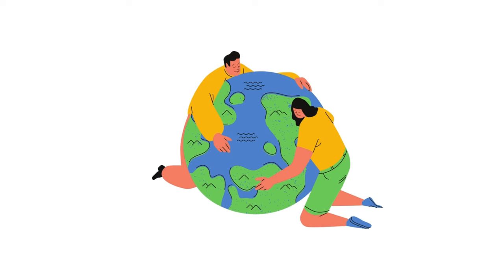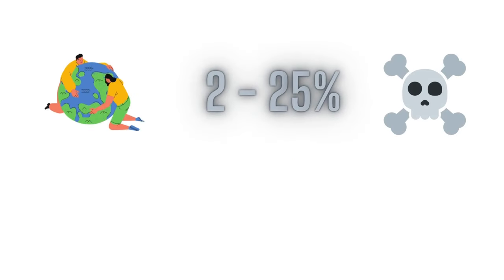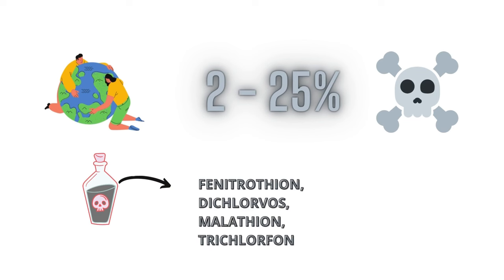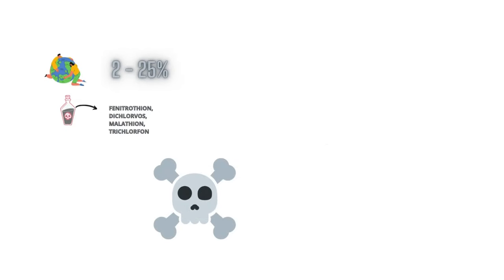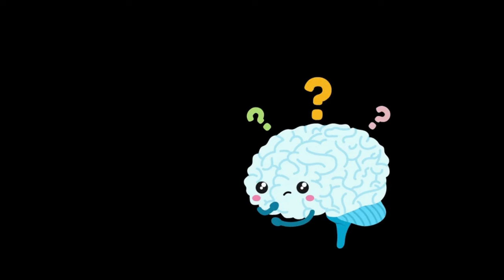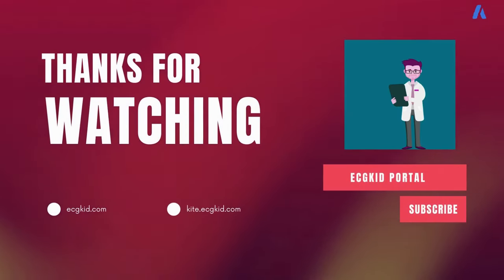Globally, organophosphate insecticides have mortality rates that vary from 2 to 25%. The most common insecticides involved in death are phenothroion, dichlorvos, malathion, and trichlorfon. The most common cause of death is respiratory failure. To learn more about different types of poisoning presentations in the emergency room and management protocols, please subscribe and support us.